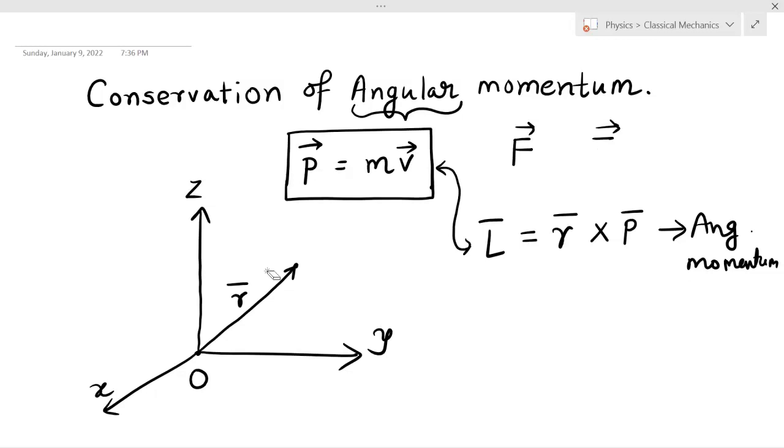That is torque given by N̄. I am using this notation N because in Goldstein it is used as N. Here N̄ is defined as r̄ × F̄, where F̄ is the rate of change of momentum of the particle.